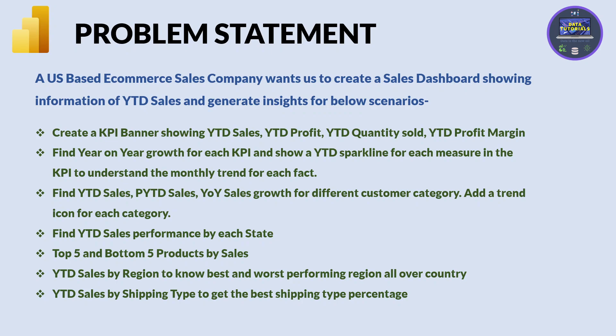Additional requirements include: YTD sales, previous YTD sales, and YOY growth by customer category with a trend icon; YTD sales by state; top five and bottom five products by sales; YTD sales by region to identify best and worst performing regions; and YTD sales by shipping type to find the highest-percentage shipping method.